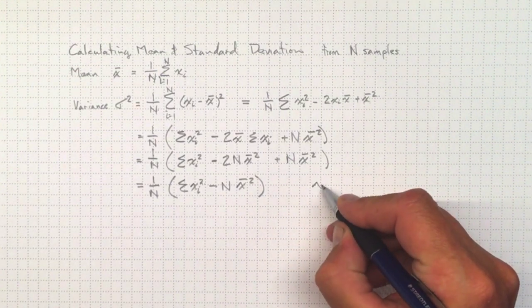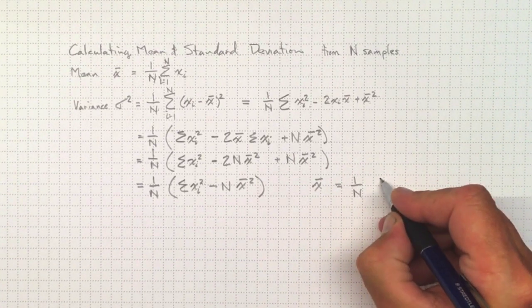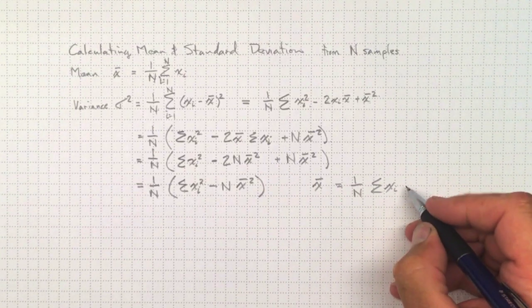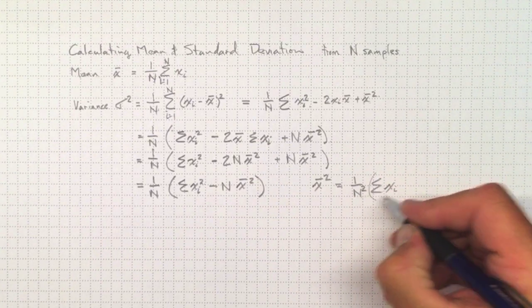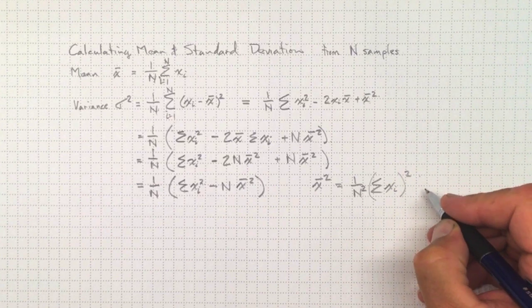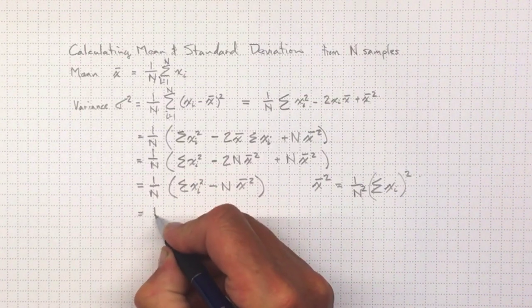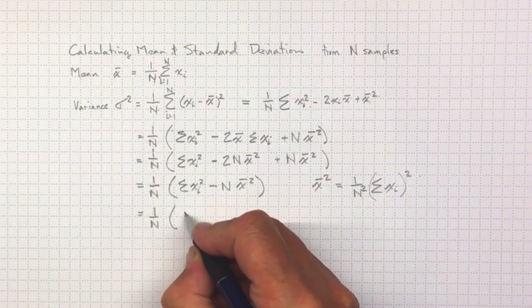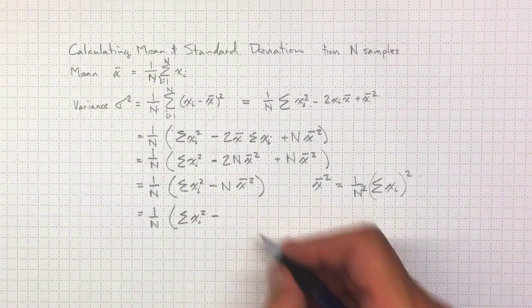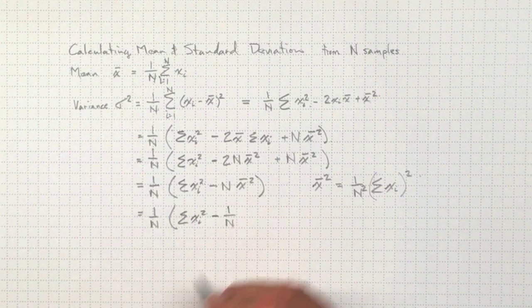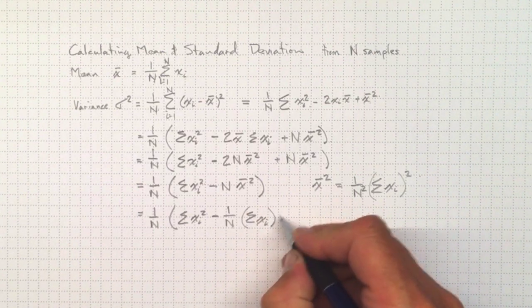But remember, x̄ is equal to 1 over n, the sum of xi. So x̄² will be equal to 1 over n² times the sum of xi². So 1 over n² times n will just give us 1 over n. So it'll be 1 over n times the sum of xi² minus 1 over n times the sum of xi all squared.